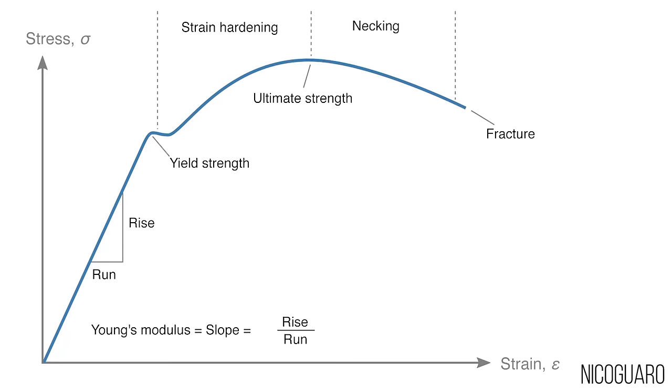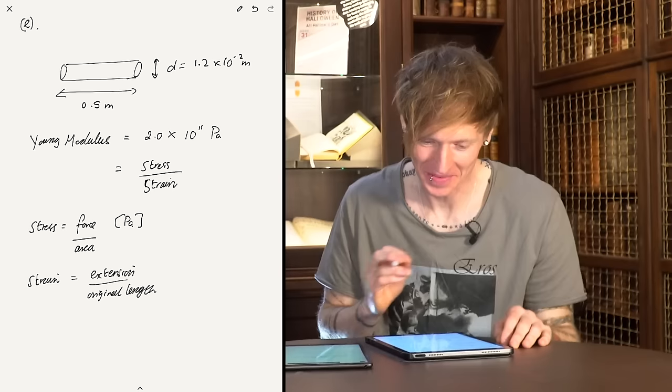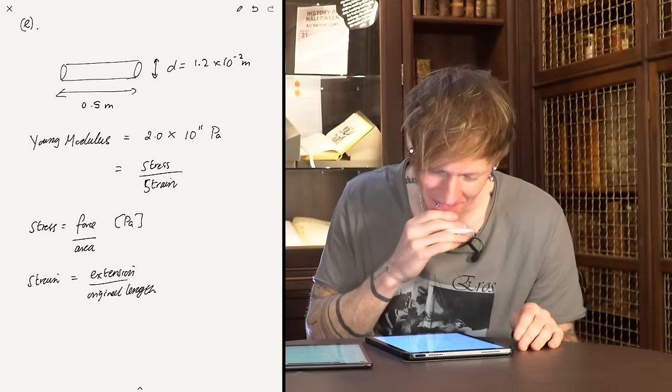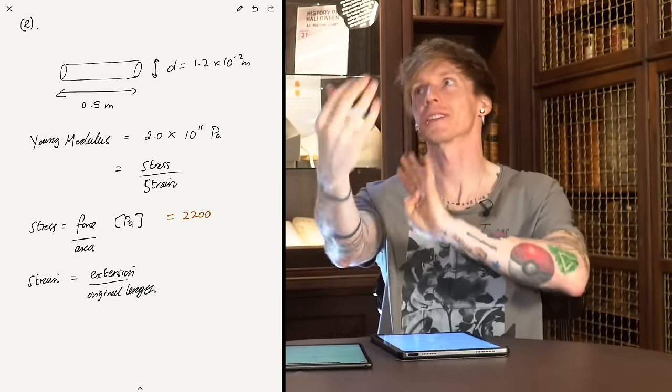If you divide stress by strain, you have the Young's modulus — and if you plot a graph, you get a nice linear region at the beginning. The question is asking me to calculate the extension. I can do this — it's now just maths and algebra. I now feel like I understand Young's modulus a little bit more. What do I know? I know the force — we worked that out earlier. The frictional one plus the weight one — so the force is 2200 in total. That was the tension in the tow bar.